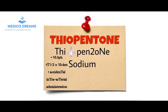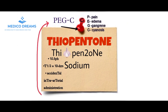The next T is for intra-arterial administration of Thiopentone. Accidental intra-arterial administration will lead to certain complications. Here we can see a PEG image with the alphabet C on it, so we remember the complications with the mnemonic PEG-C: P for pain, E for edema, G for gangrene, and C for cyanosis.